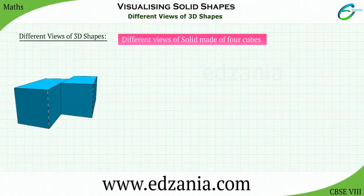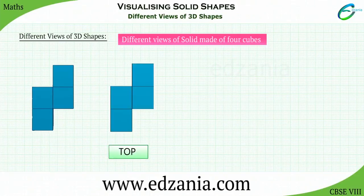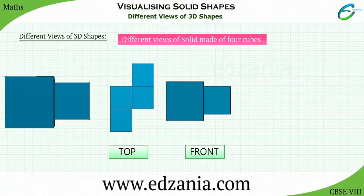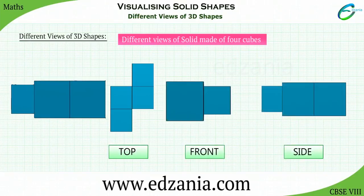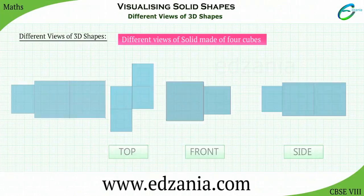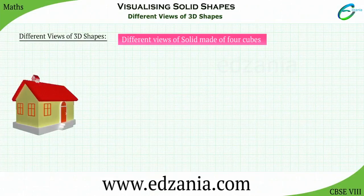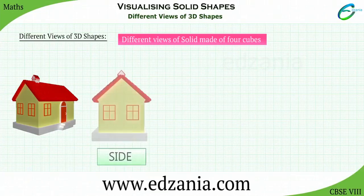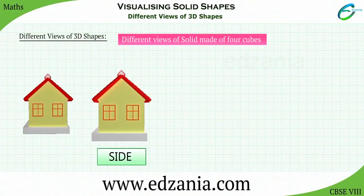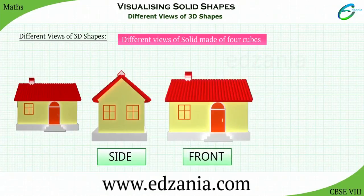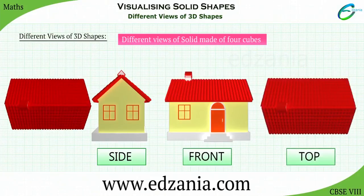Here is one more solid object made of 4 cubes. Observe the different views of the solid object — the front view, side view, and top view. Can you guess what view it is? You can easily identify this view.